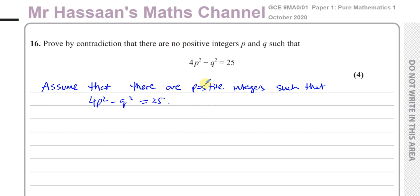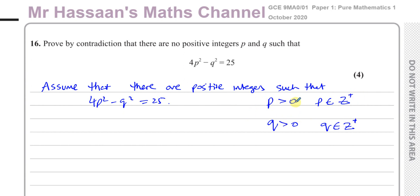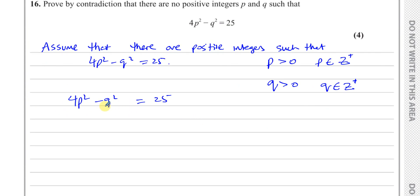So we're assuming the opposite — we're going to show that P is greater than 0, P is an element of the integers, and Q is greater than 0 and Q is an element of the positive integers. We have to show that when we assume this, it leads to what's called a contradiction. So what I'm going to do now is say: 4P² minus Q² equals 25. What I notice here is I have a difference of two squares, so I can factorize this as (2P + Q)(2P − Q) = 25.